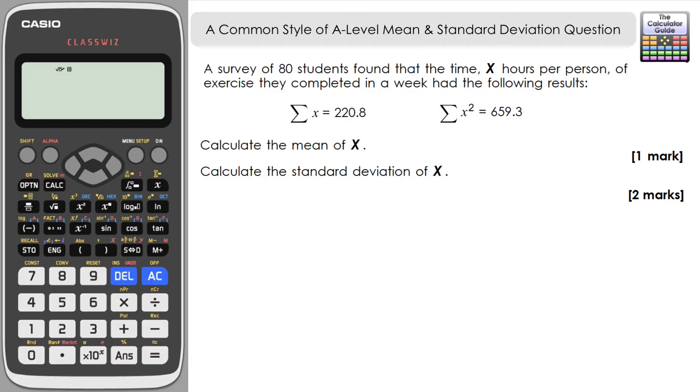We've got a survey of 80 students finding that the time in x hours per person of exercise that they completed in a week had the following results. There we have the sum of x and the sum of x squared given to us, and this is all we need to be able to work out the mean and standard deviation of our variable x.